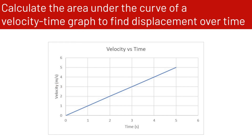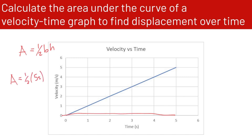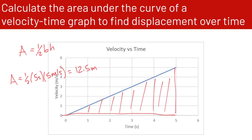Now doing this geometrically, the area of a triangle is one half times base times height. Our base is 5 seconds and the height is 5 meters per second, so the area equals one half times 5 times 5, which is 25 divided by 2, equal to 12.5 meters. The area under the graph is 12.5 meters, just as we calculated before.